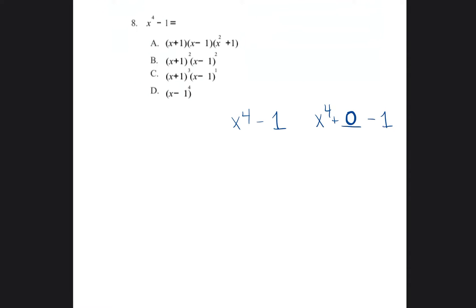When we're trying to factor a trinomial, we need to find two numbers that multiply together to equal negative one and add to get the middle number, which would be zero.